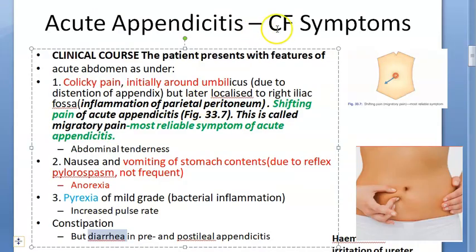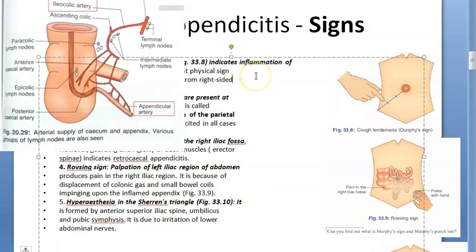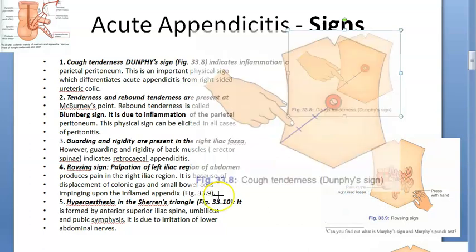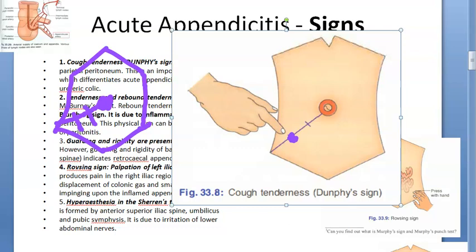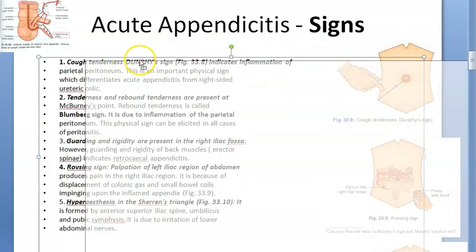Now let us go to the signs of appendicitis. The first sign is cough tenderness — called Dunphy's sign — due to inflammation of the parietal peritoneum. When drawing exam diagrams, join the umbilicus and anterior superior iliac spine, divide it into three parts, and the junction of the outer and middle thirds is the McBurney point. Drawing this diagram is important for exam marks.